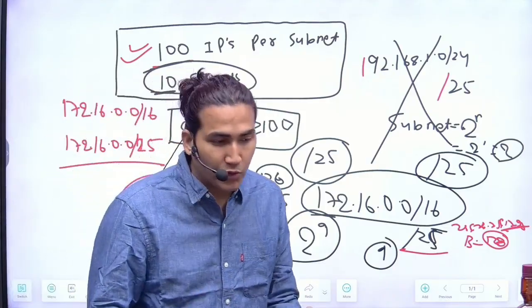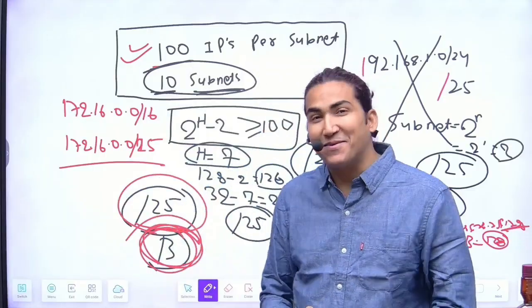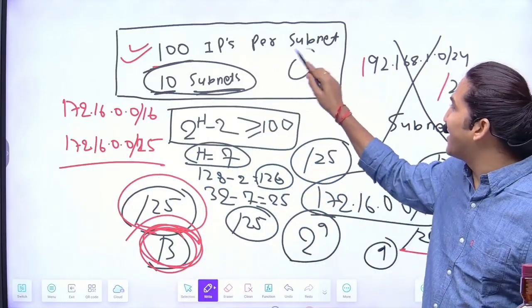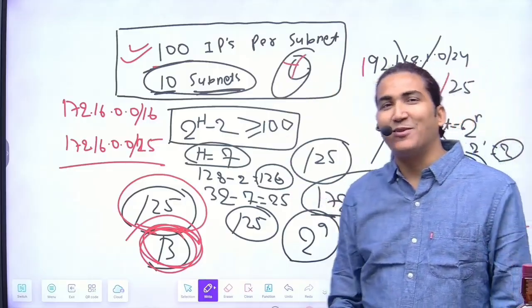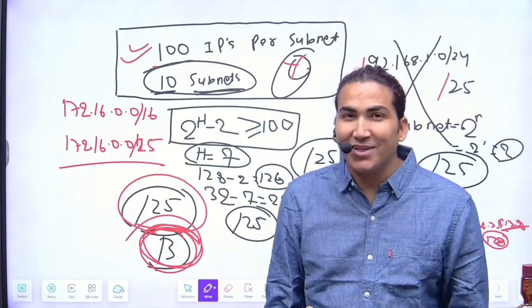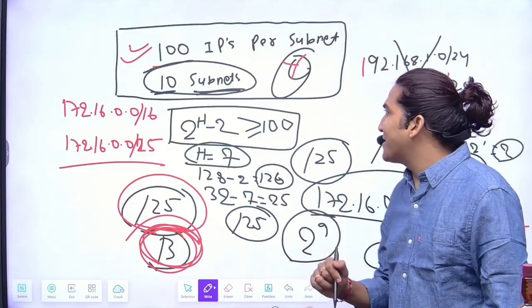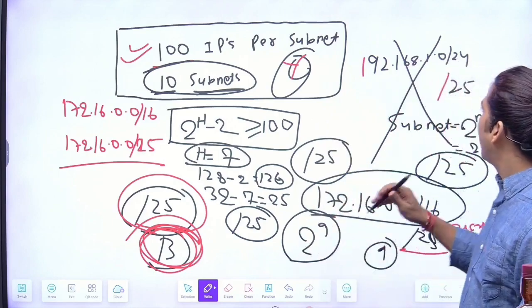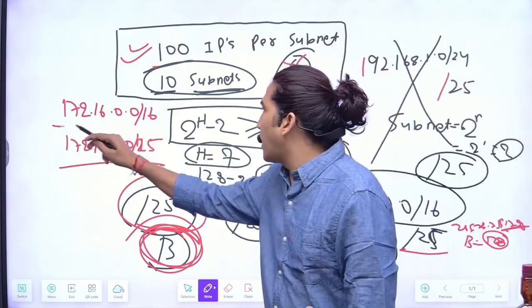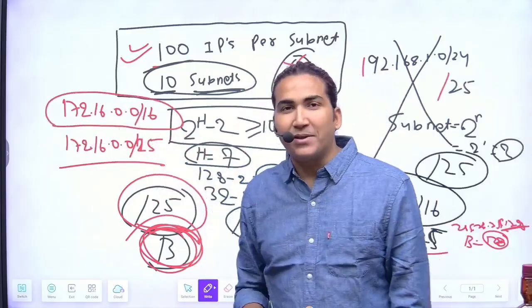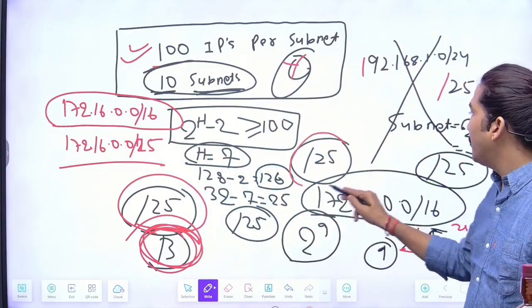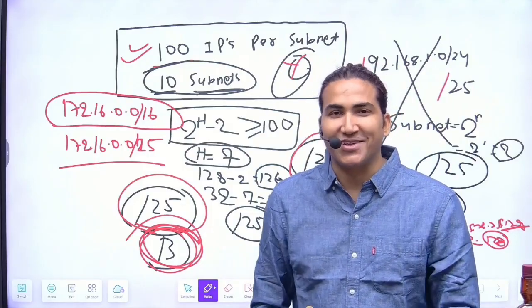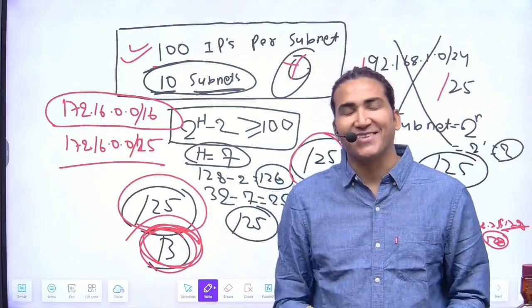So my paid student did a mistake. He said yes, from Class C I can use the IP address, but no guys, Class C will not work. Now if you know the subnetting then tell me what will be the 2nd subnet, 3rd subnet, 4th subnet. If I am using this IP address Class B main subnet and slash value is 25, then tell me what will be the 2nd subnet. This is your question. Let me know in the comment section. Thank you.